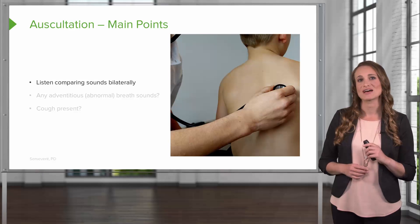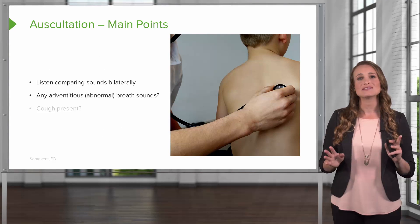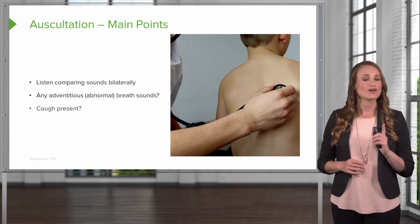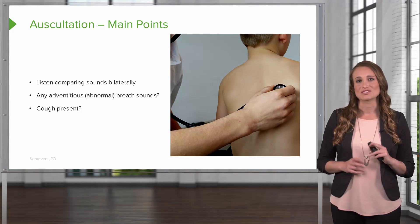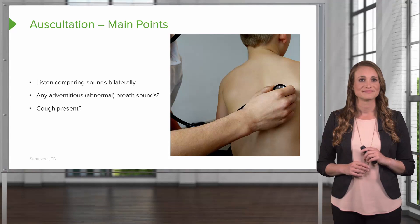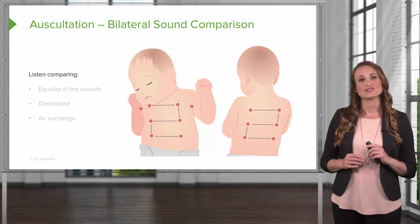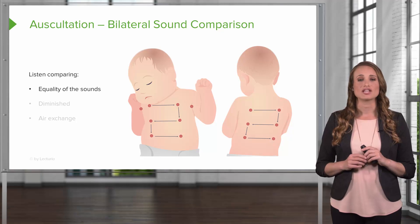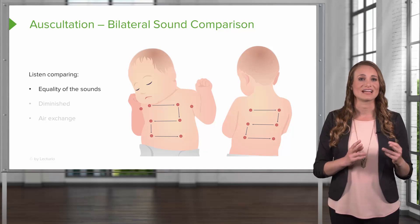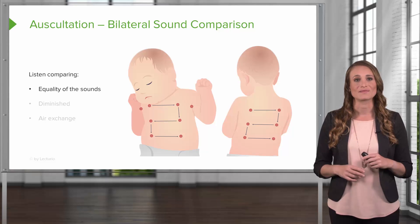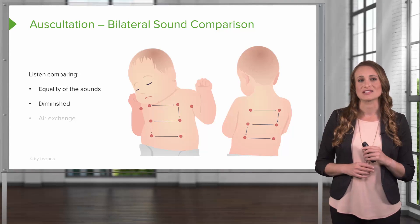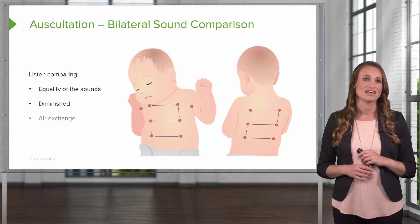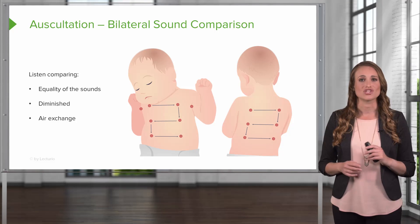You're going to compare the sounds bilaterally, and you're going to be listening for any adventitious or abnormal breath sounds. You're also going to be checking during this exam — does your patient cough. When you listen to a child, you're going to be comparing the equality of the breath sounds, always comparing the right with the left at the same level of the lung. You're going to be listening for diminished sounds, which can show up in the setting of a pneumothorax or a consolidation, and you're going to be checking for air exchange bilaterally.